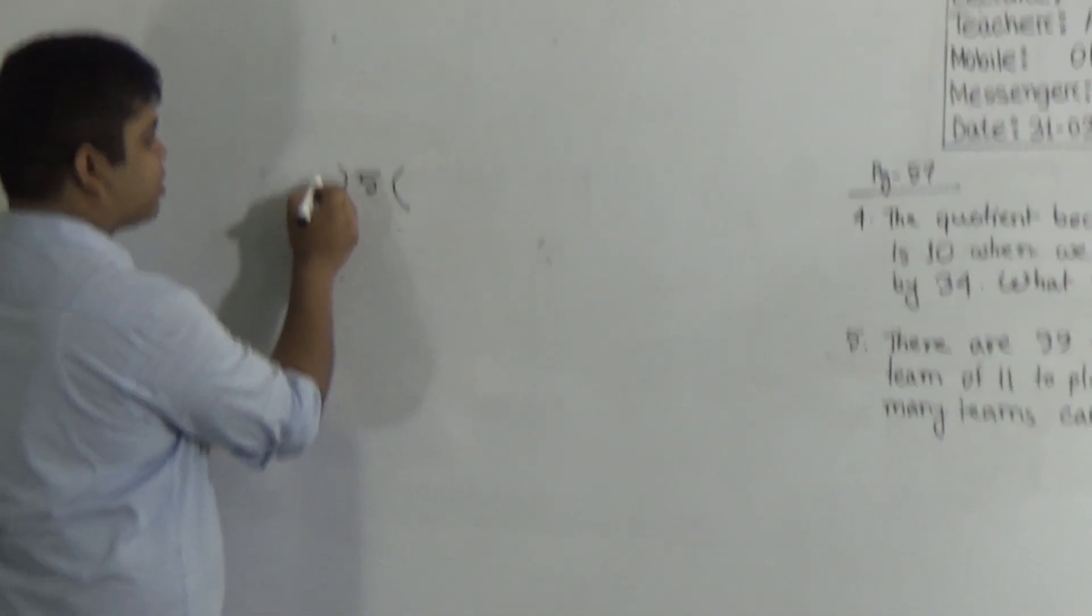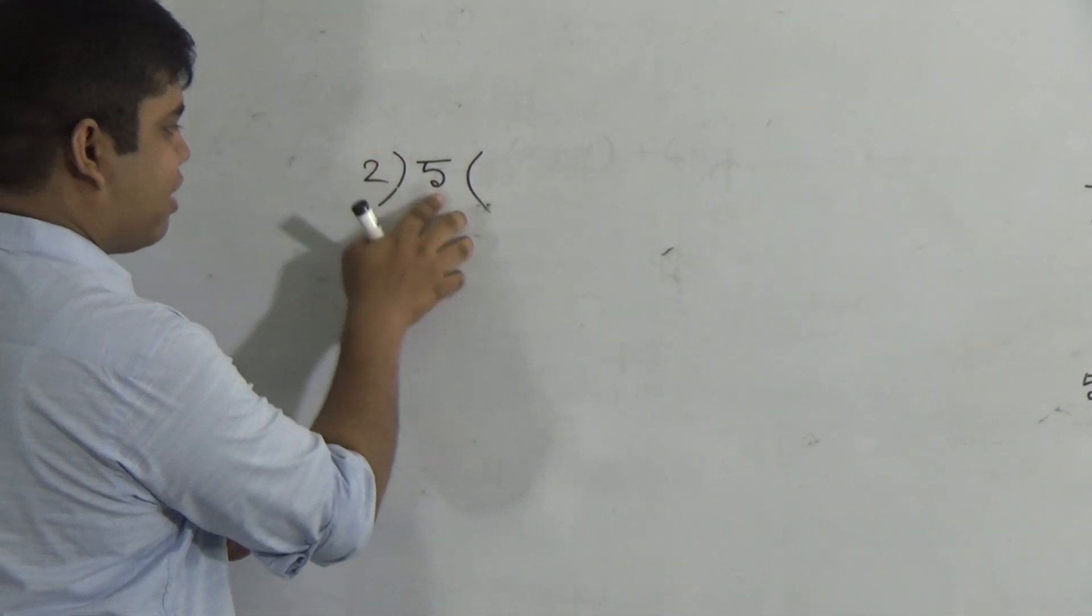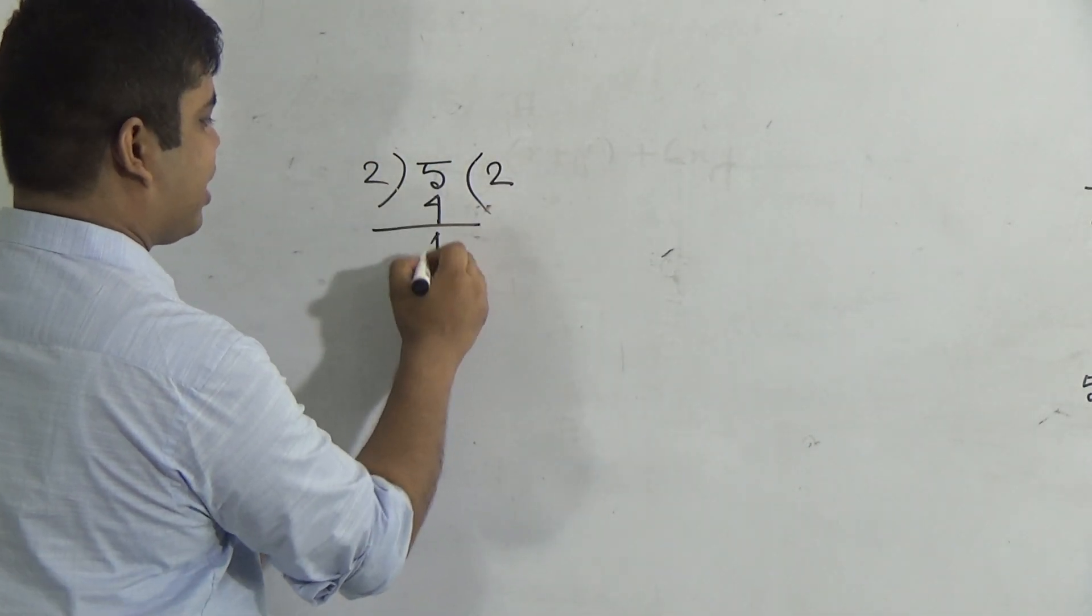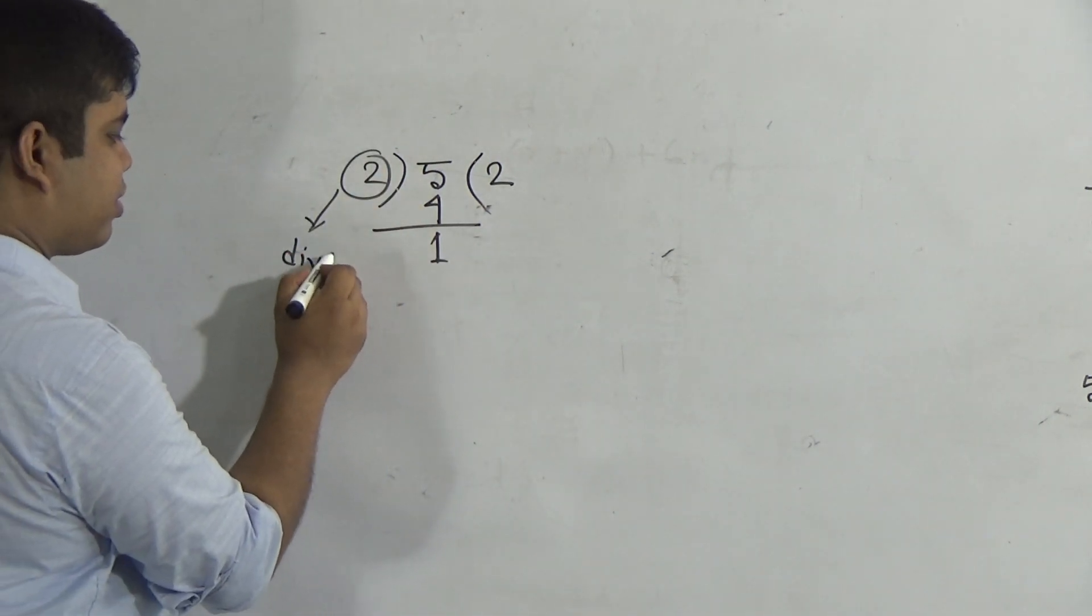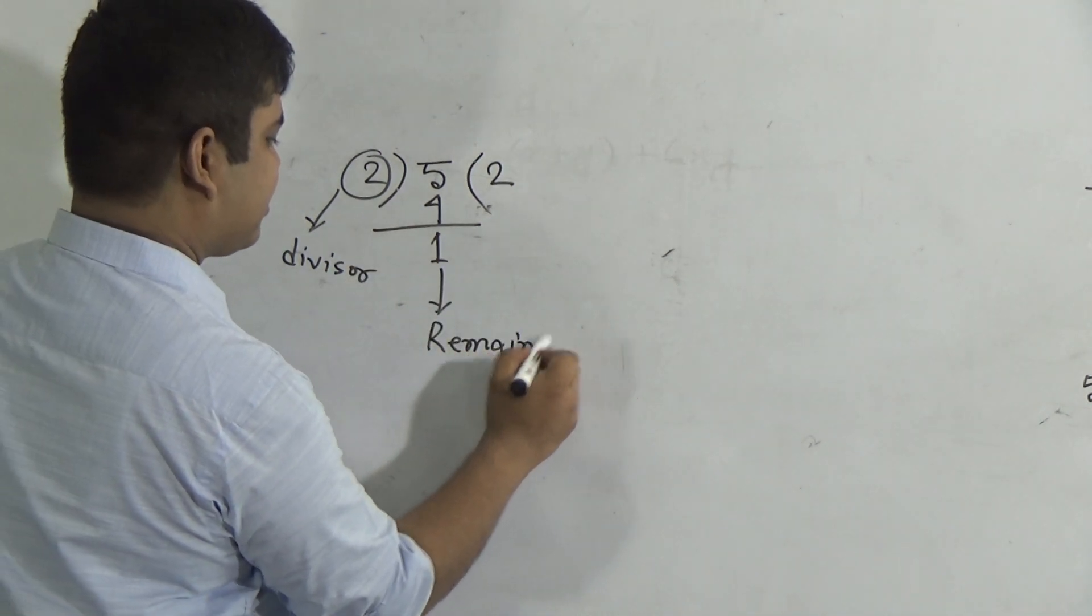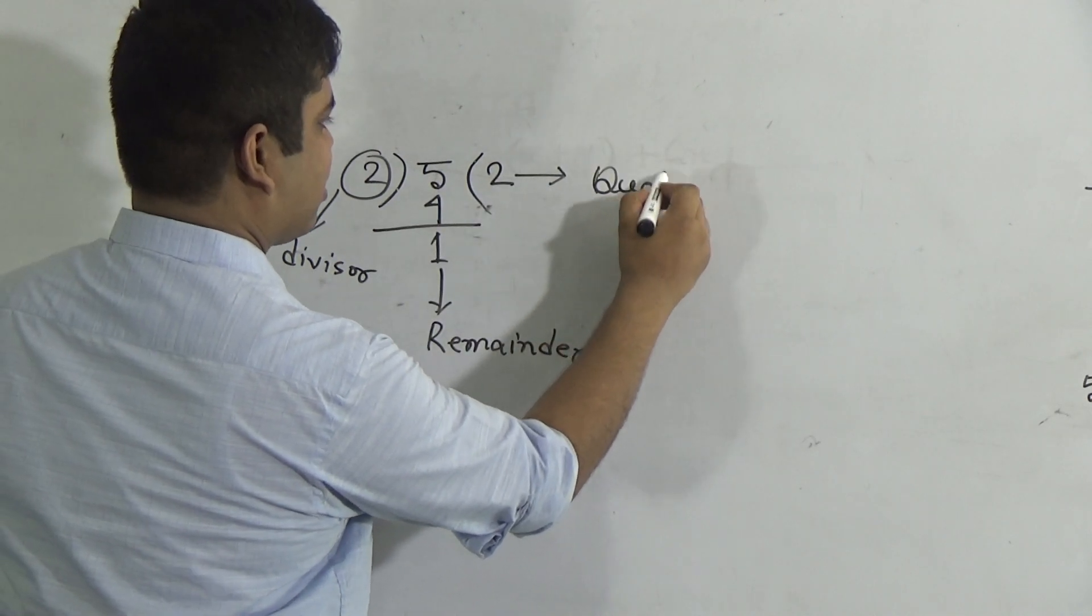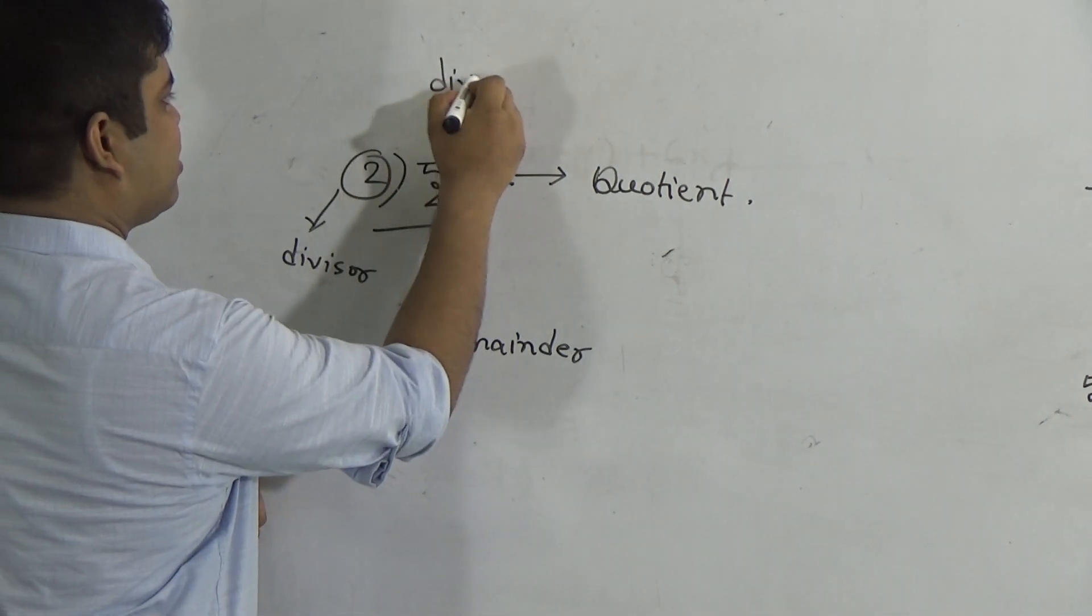Before starting to solve this math, at first we notice an example of division: 5 divided by 2. My dear students, 2 in 5, 2 goes in 2 times, 2 times 2 is 4. Therefore, if we subtract, then we get 1. Here 2 is divisor, 1 is remainder, 2 is quotient, and 5 is dividend.